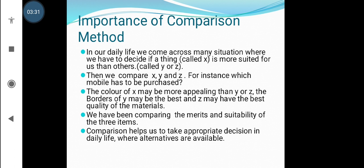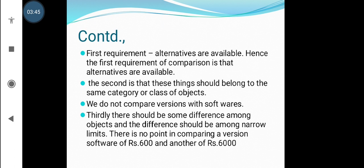Comparison helps us to take appropriate decisions in daily life where alternatives are available. We have a choice, and that choice enables comparison. The first requirement of comparison is that alternatives are available. The second is that things should belong to the same category or class of objects.